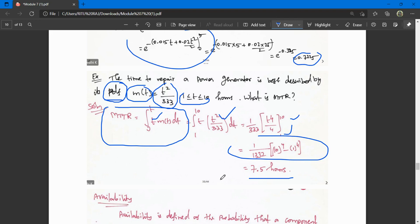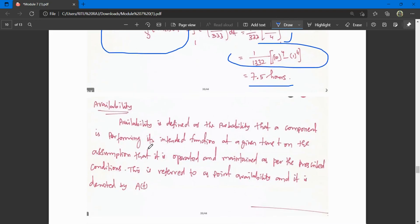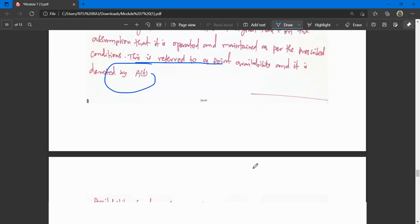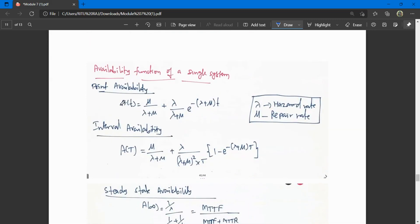Now availability. Availability is defined as the probability that a component is performing its intended function at a given time t, assuming it is operated and maintained per prescribed conditions. This is referred to as point availability, denoted by A(t). When the machine performs its desirable function at prescribed time with maintenance, it is called availability.